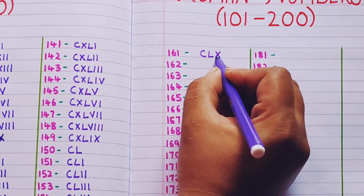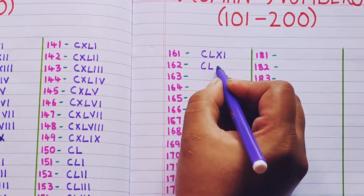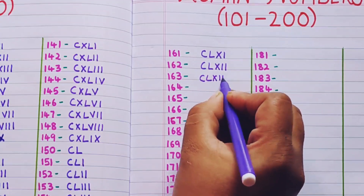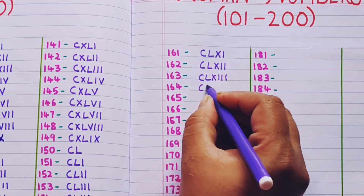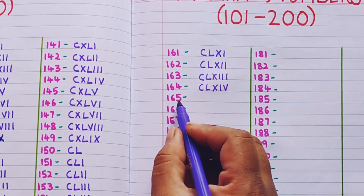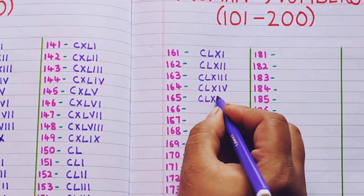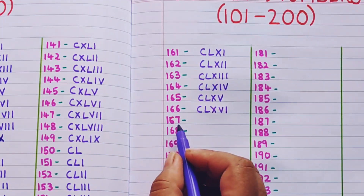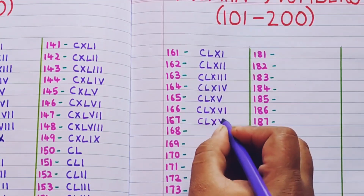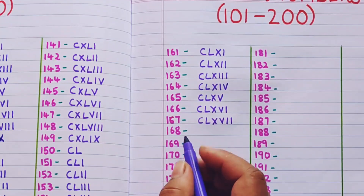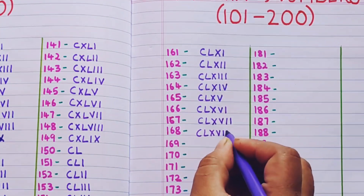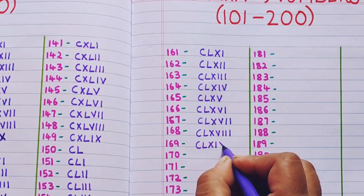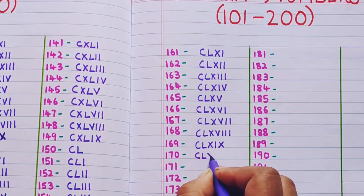161 is CLXI, 162 is CLXII, 163 is CLXIII, 164 is CLXIV, 165 is CLXV, 166 is CLXVI, 167 is CLXVII, 168 is CLXVIII, 169 is CLXIX, 170 is CLXX.